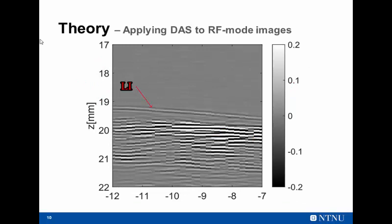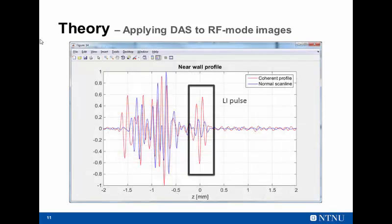Going back to my RF image, what would happen if I were able to calculate this delay in the lumen-intima interface, take a section of that signal, delay it, and sum it? So I got a coherent profile that would show that the lumen-intima interface has a higher amplitude, while keeping the media-adventitia or the reverberations noise at the same level. So this is the idea I want to apply.